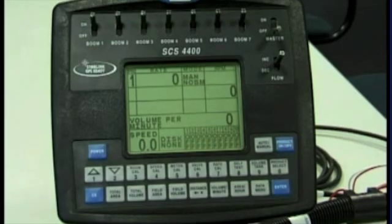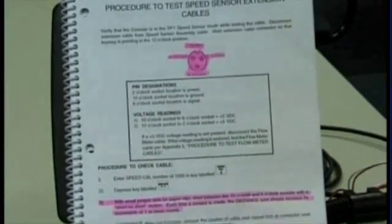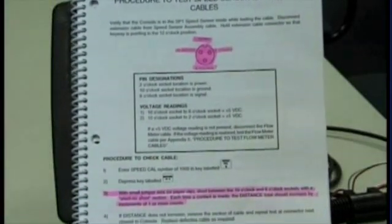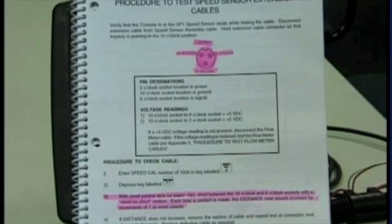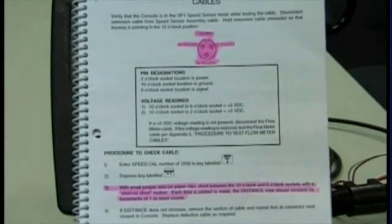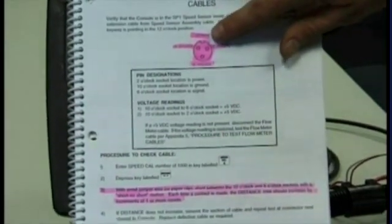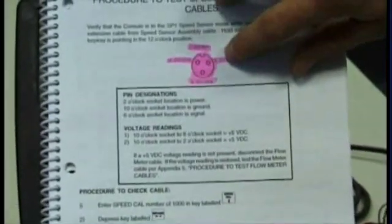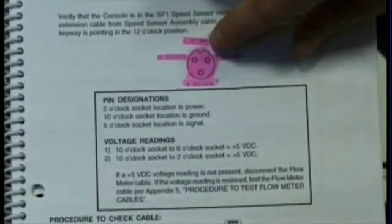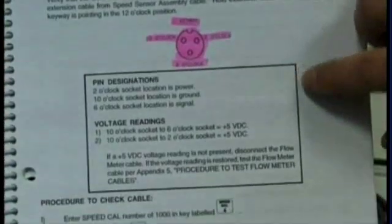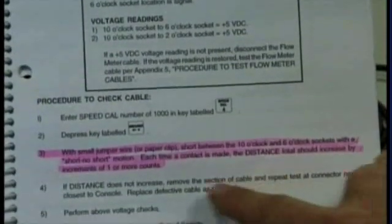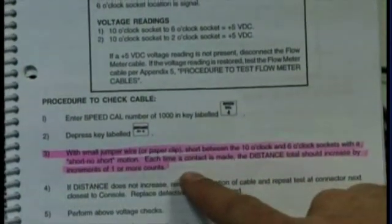To do this, we need to refer to the manual, which on page 58 in Appendix 4, Procedure to Test Speed Sensor Extension Cable, you'll see the connector is labeled with keyway, two o'clock, six o'clock and ten o'clock pins. Down further on the page, it will explain how to test the cable with a small jumper wire.